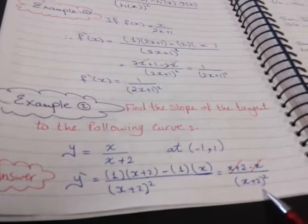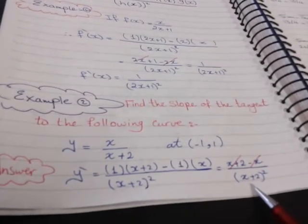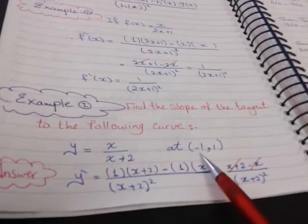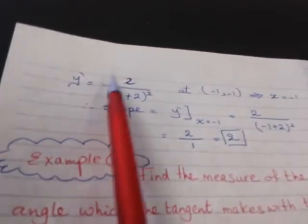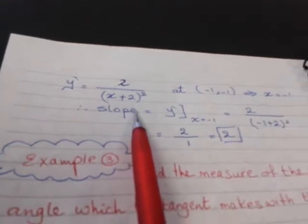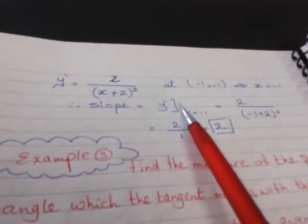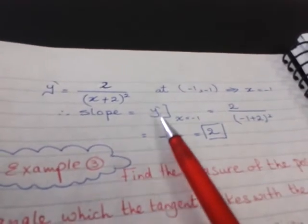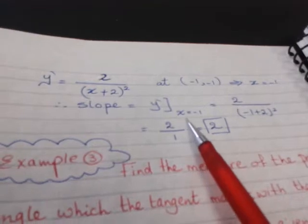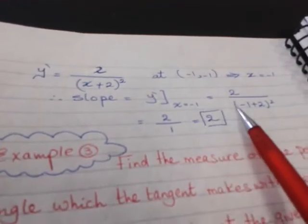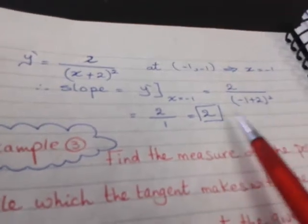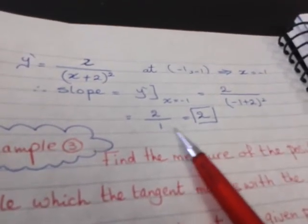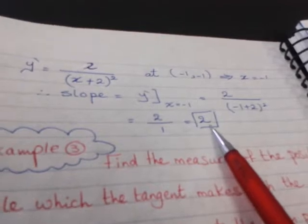After substituting x equals negative one, you get the slope. y-dash equals two over (x plus two) squared. At x equals negative one, slope equals y-dash equals two over (negative one plus two) squared, which is two over one, equals two. So the slope equals two.